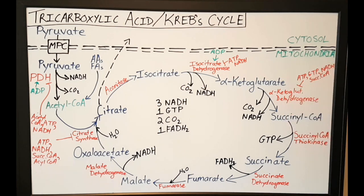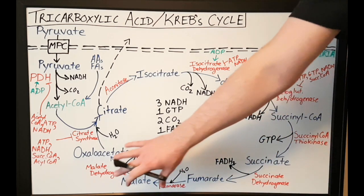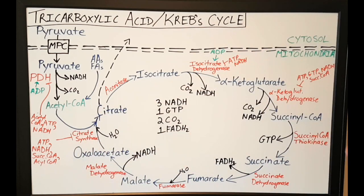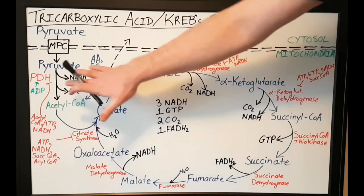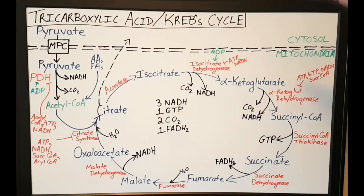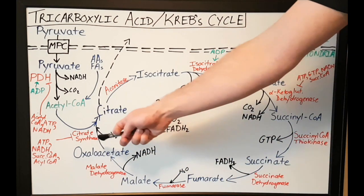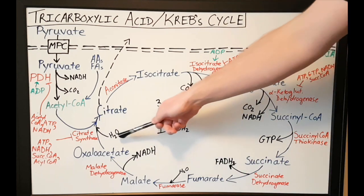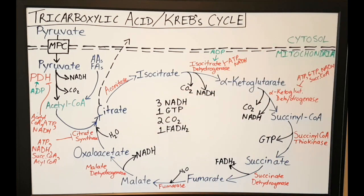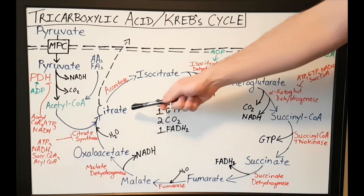Once you have acetyl-CoA, oxaloacetate will combine with acetyl-CoA with the help of an enzyme called citrate synthase. Citrate synthase adds oxaloacetate with acetyl-CoA together, along with a water molecule, and it gives you a citrate.